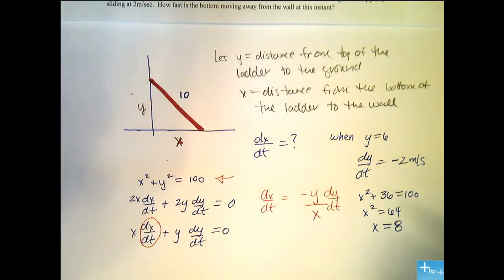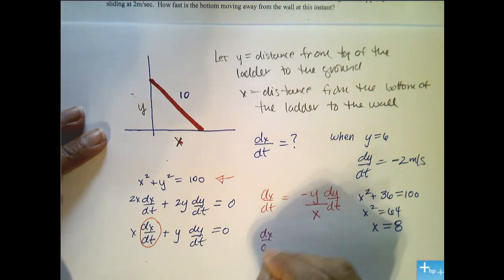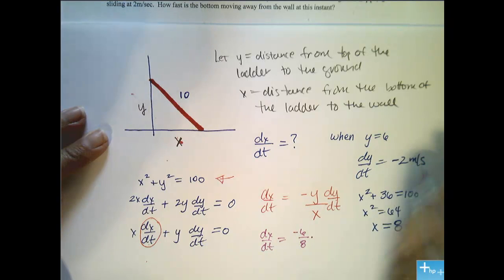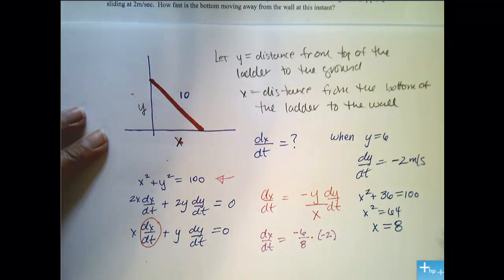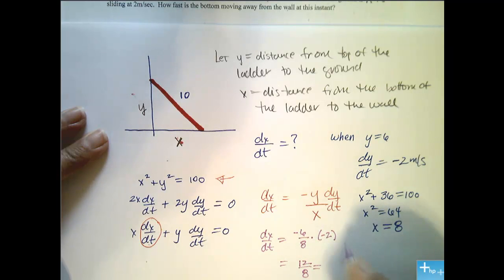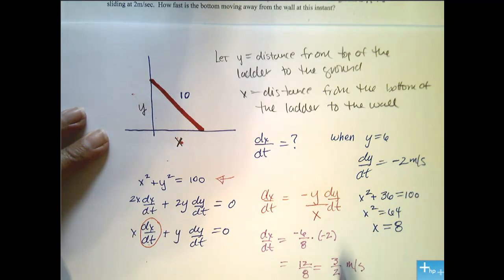Okay, so, dx/dt equals, so my negative y, negative 6, over 8, times dy/dt, which is negative 2. Okay? So this actually reduces to 12 over 8, which reduces to 3 halves. Make sure you include your units, which are meters per second. So dx/dt equals 3 halves meters per second, which is positive, which makes sense.